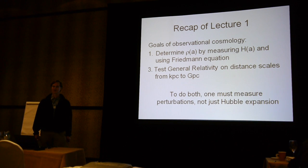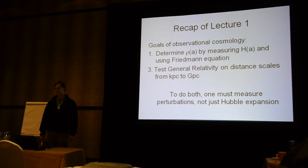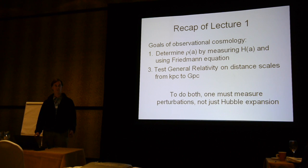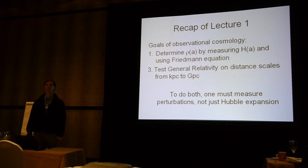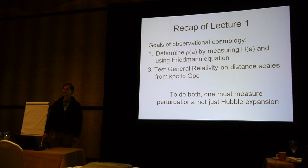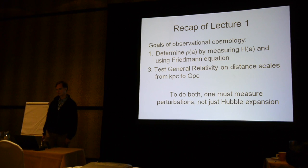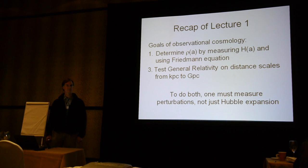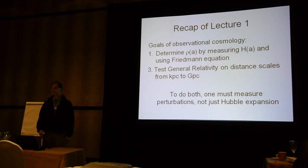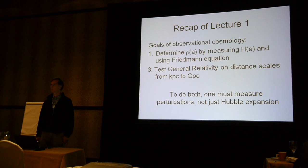First of all, if you were paying attention, you will notice that I listed two goals of observational cosmology. The first was to determine the matter density — or in fact the total energy density of the universe — by measuring the expansion history using the Friedman equation. That is the standard technique used for many years and underlies major cosmology projects, including the supernova cosmology projects in their various forms, measurements of BAO, and so on. From measuring distances, redshifts, or expansion history, the goal is to understand the composition of the universe, and it is from such measurements that we infer the existence of dark energy.